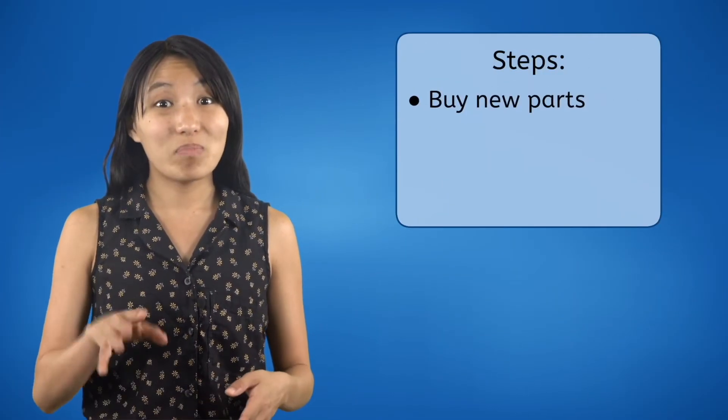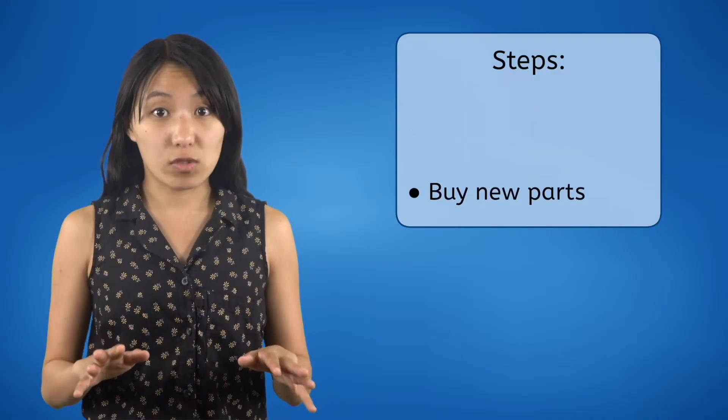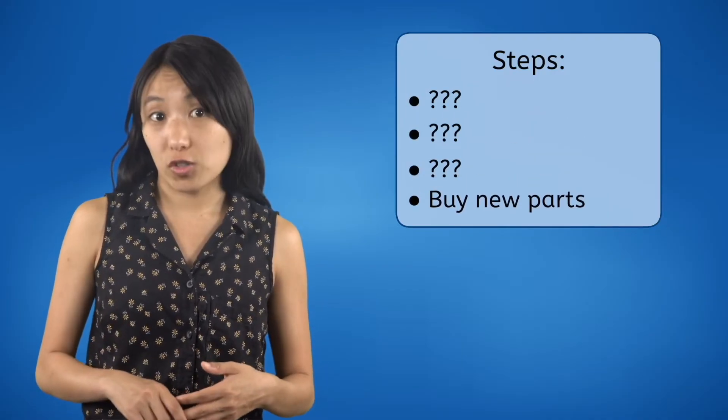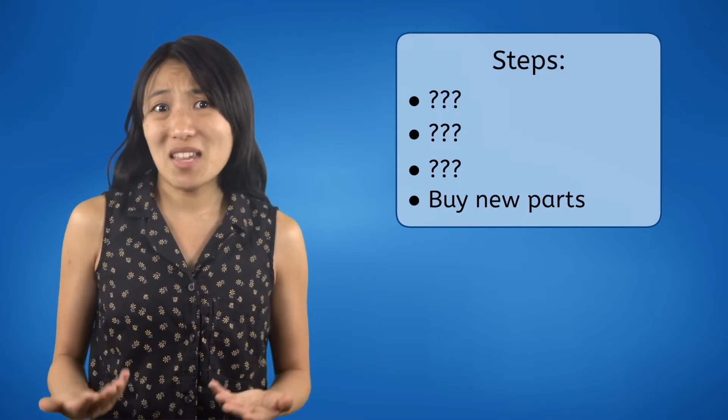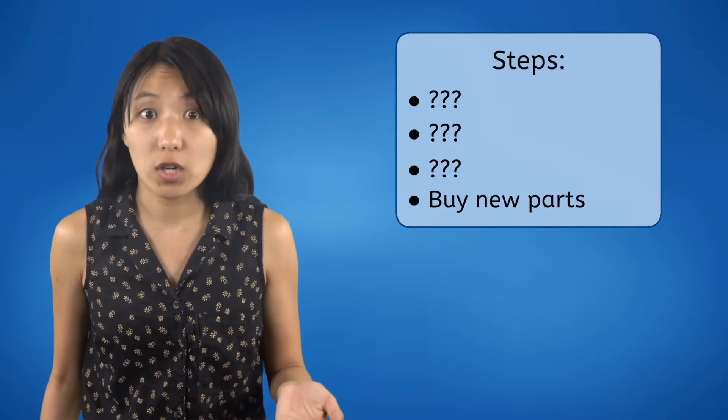A major part of Unit 1 was learning what all the different parts of a computer do, so if they break or malfunction, you'll know what needs fixing or replacing. But buying new parts should only be a last resort when you've tried everything else first. With a little troubleshooting, most malfunctions can be solved within minutes — not to mention, for free.